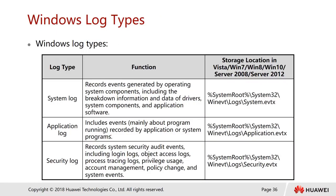System logs record events generated by operating system components including driver breakdowns and application software data. The log file location applies to Windows Vista, 7, 8, 10, and Server 2008 to 2012. Application logs record events about programs running, recorded by applications or system programs. Security logs contain security audit events including login logs, object access logs, process tracing, privilege usage, account management, policy changes, and system events.